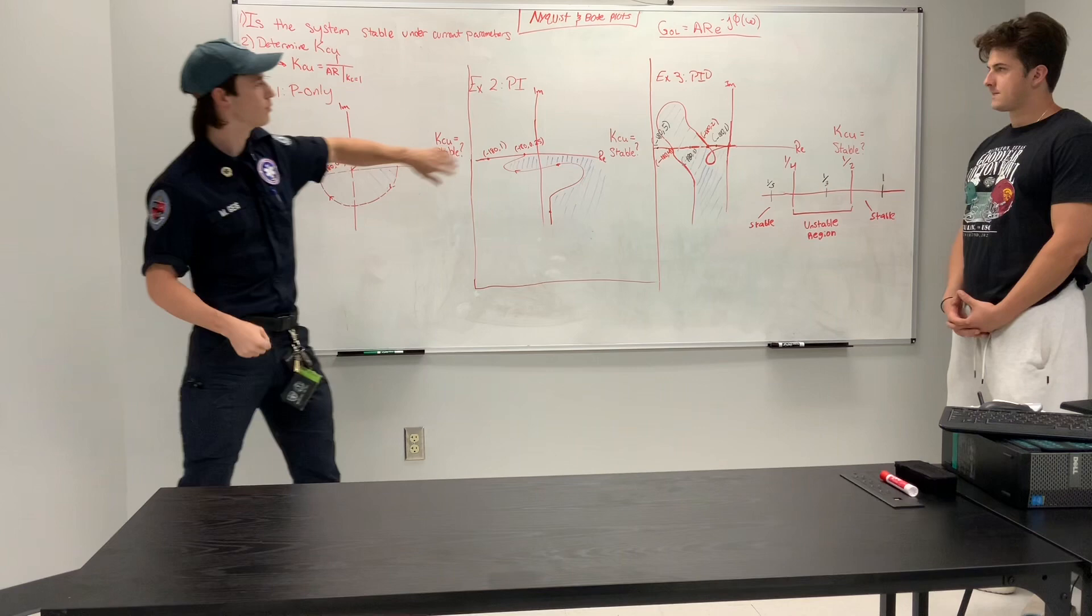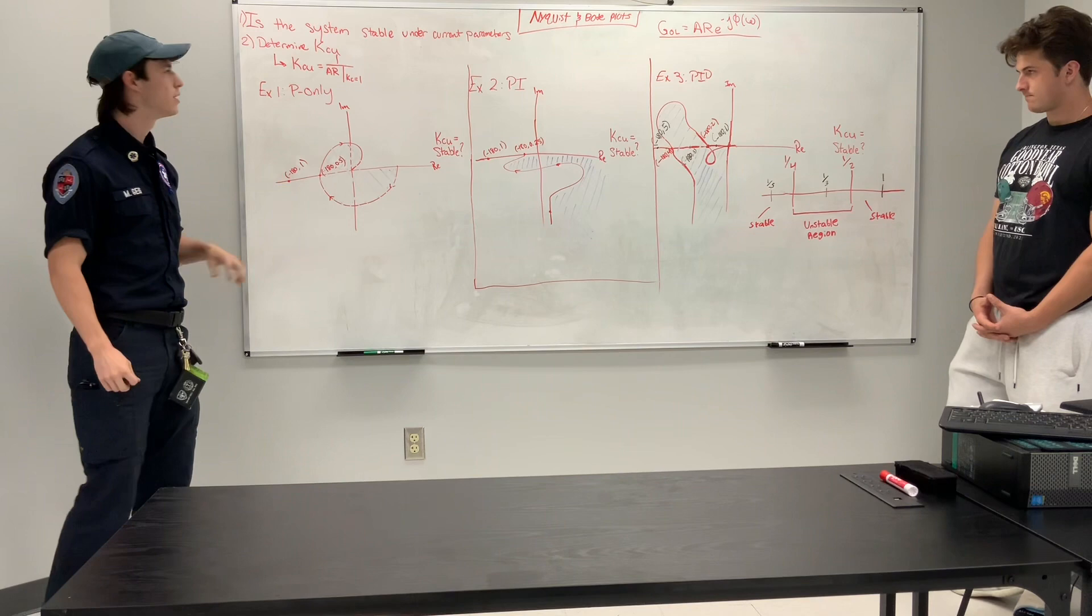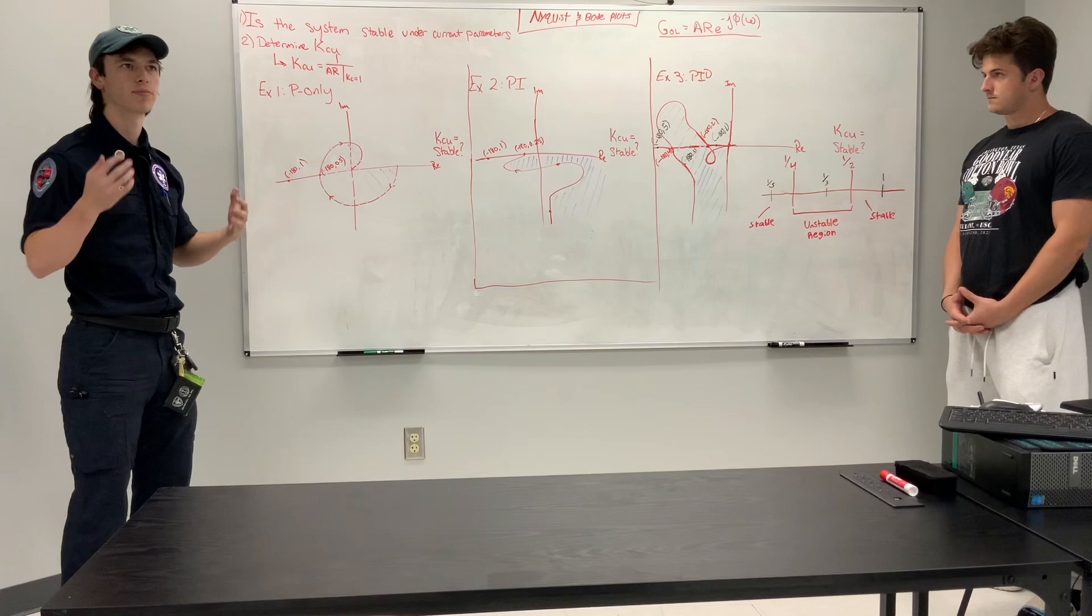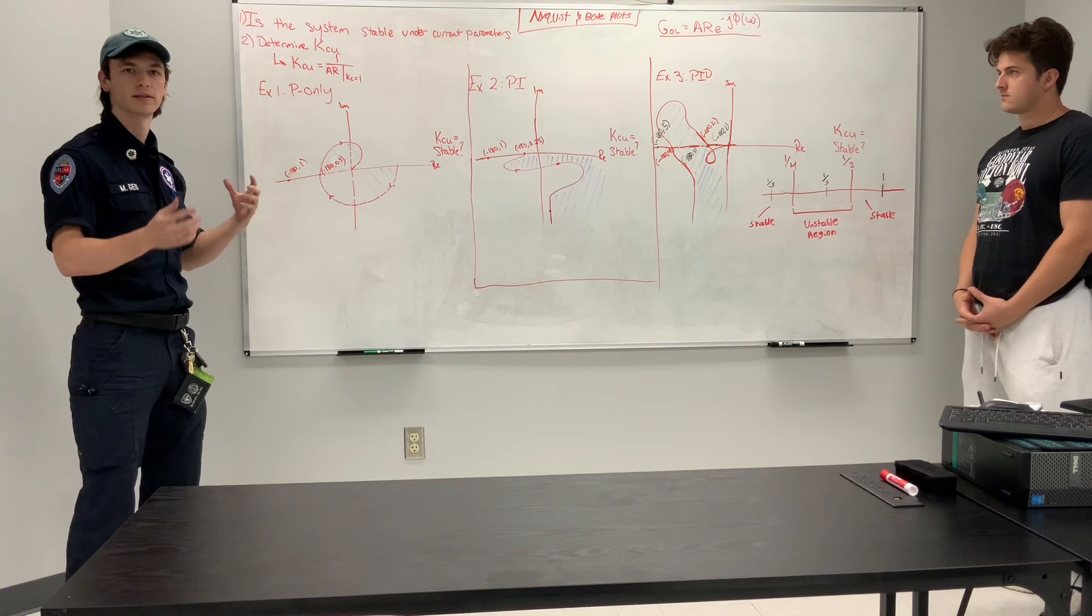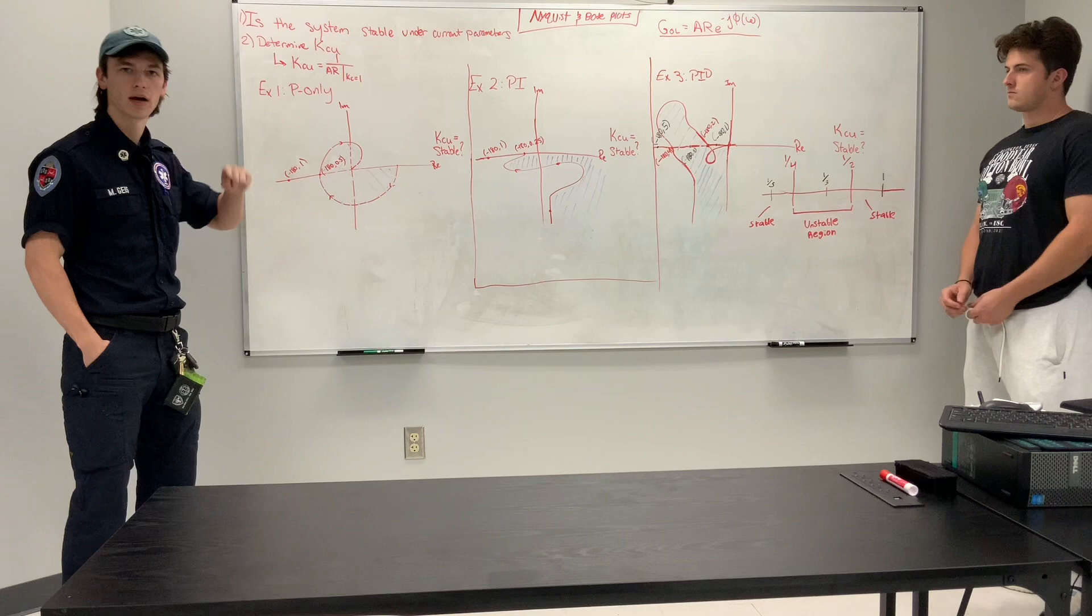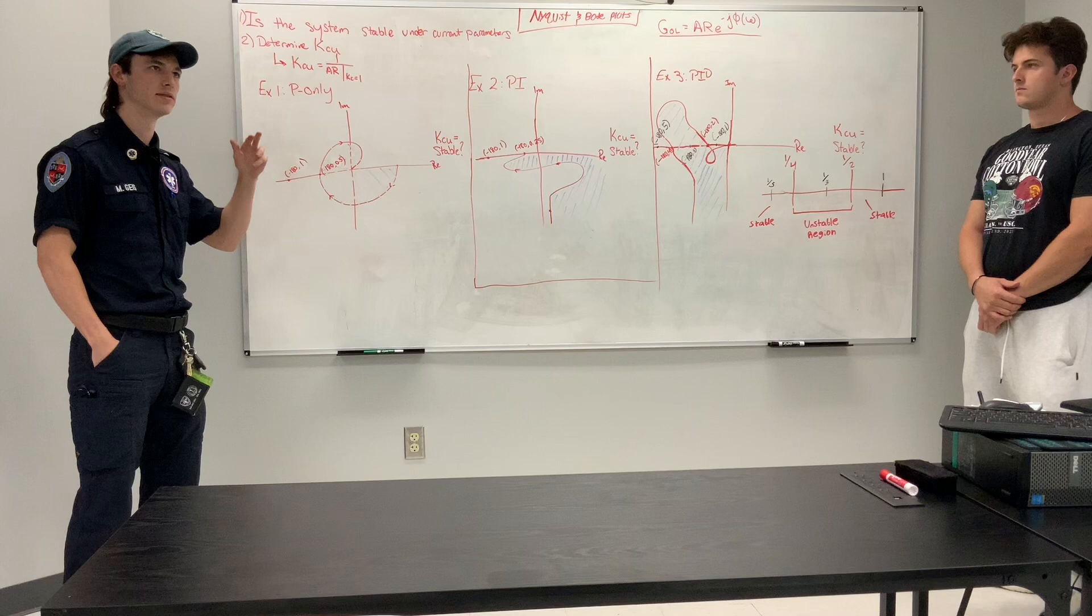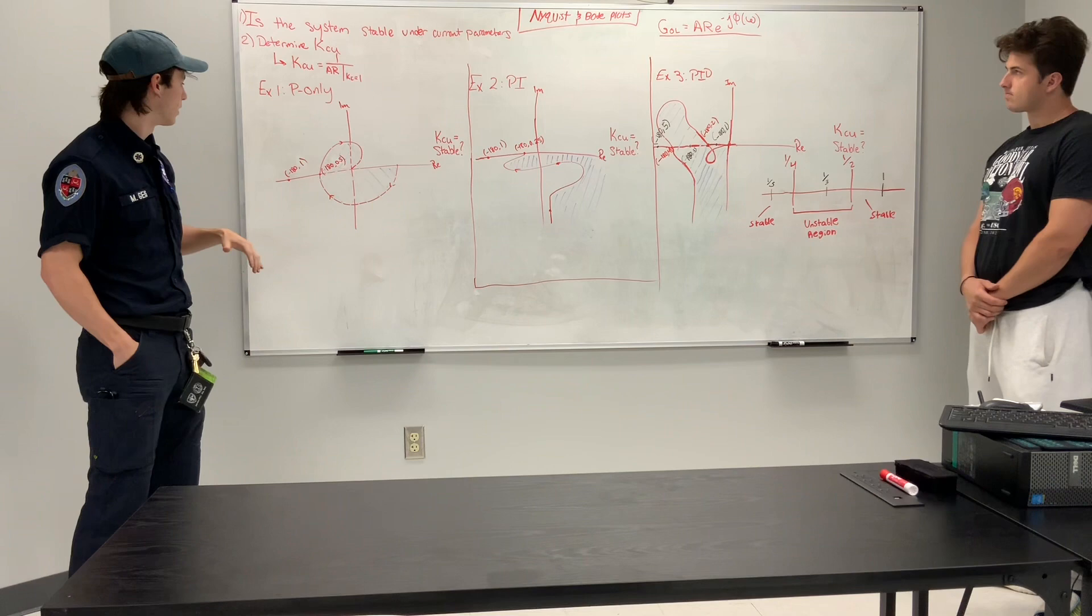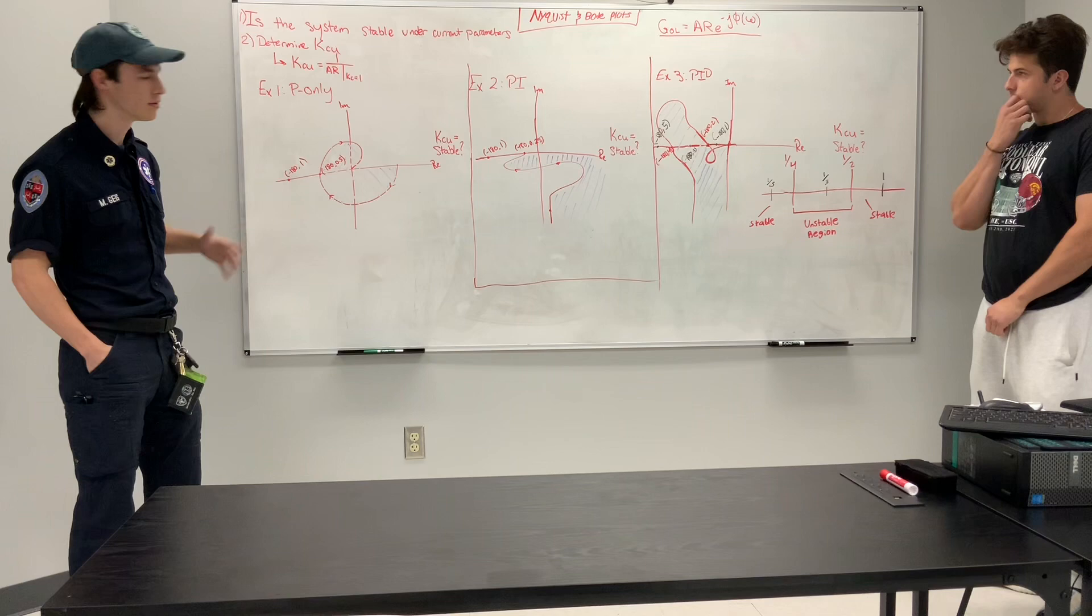So we've prepared three examples for you guys. One that's P-only, one that uses PI control, and a third that uses a PID controller. And with each of these problems, you have two objectives. The first is to determine if the system is stable under the current parameters. And the second is to determine the ultimate Kc, which is the controller gain at metastability. When you're doing these problems, you're constructing the graphs at a gain-neutral system, so K is 1. And you're looking at the points in which the phase angle is negative 180 degrees, because the tangent of negative 180 is 0, so your phase angle drops out of the equation, and we only become concerned with your amplitude ratio or gain.